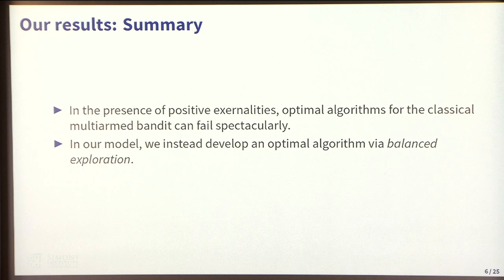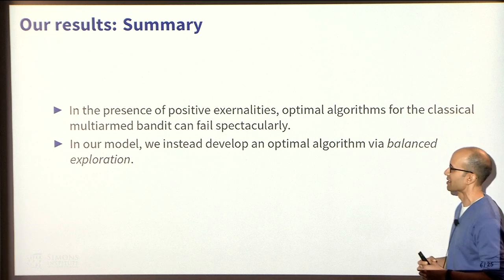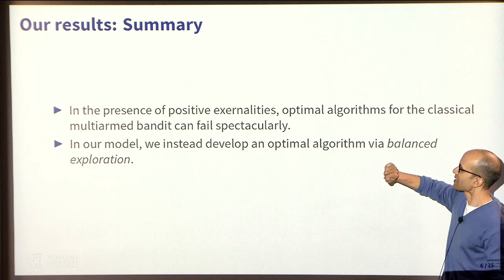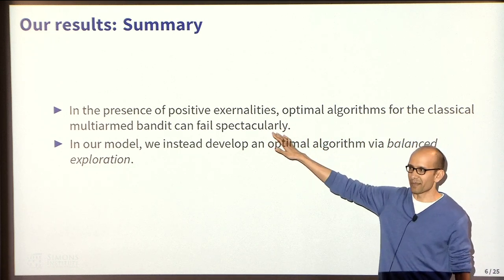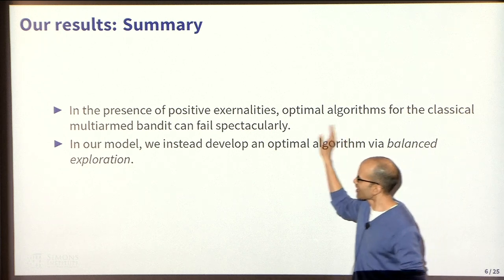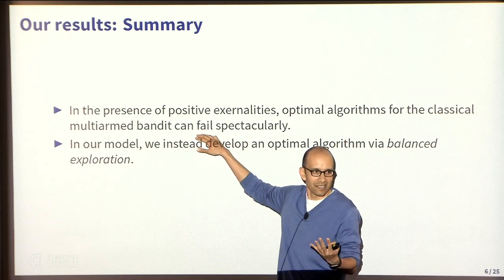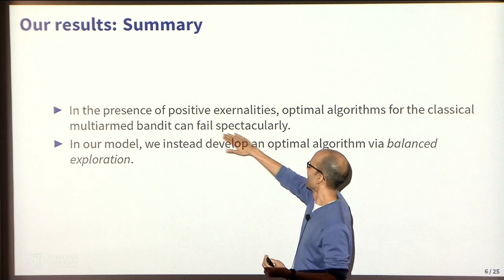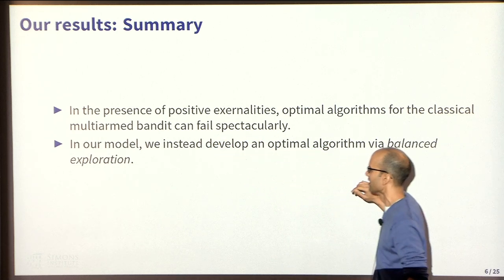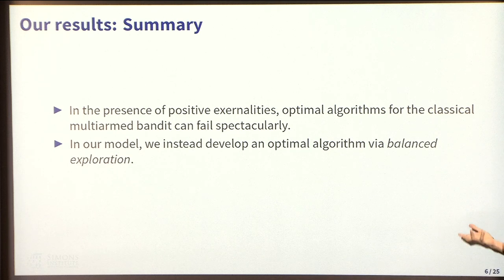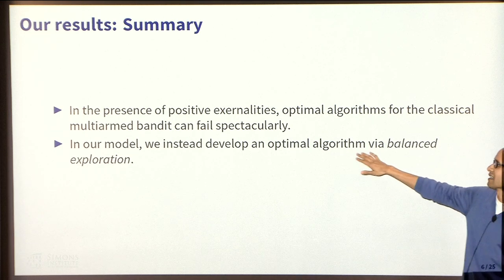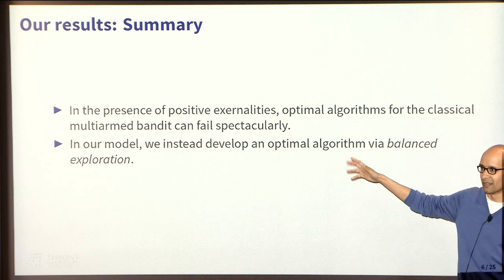Here's the summary of our results. It's basically just two main things I'm going to tell you. One of them is that optimal algorithms for the standard multi-armed bandit can fail spectacularly. The first answer I'm giving you here is yes, the thing I told you in the last two slides actually is a problem and it can happen. I'll fill in for you what I mean by spectacularly as we go along. Given that that's the case, what would a good algorithm look like? We basically characterize a good algorithm and a matching lower bound.